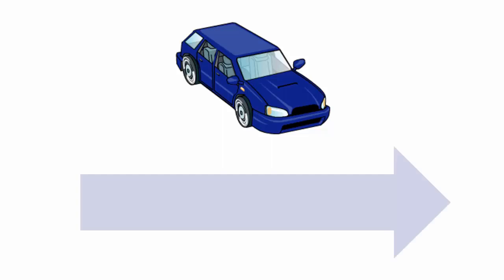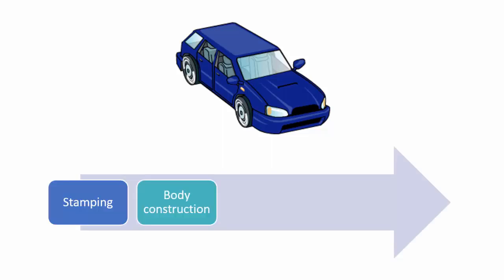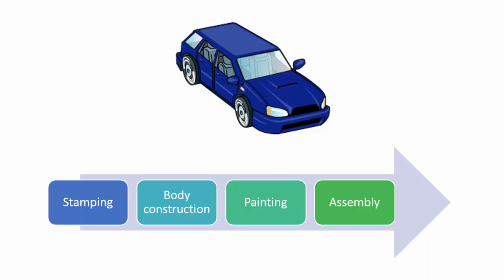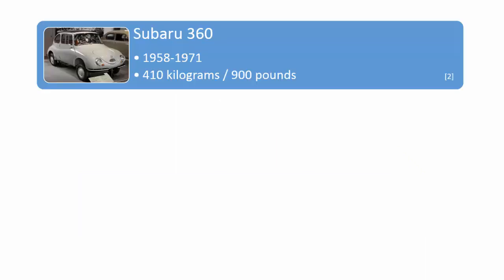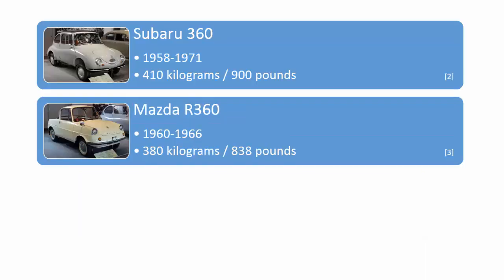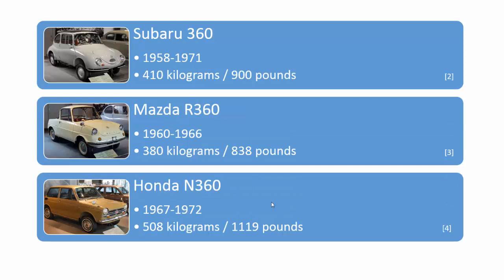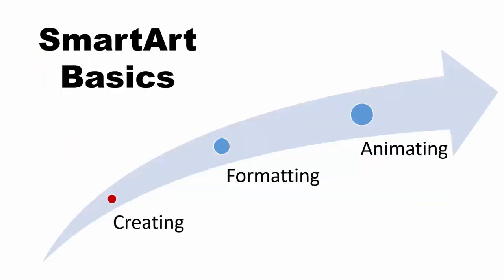There are five steps in making a car: stamping, body construction, painting, assembly, and inspection. Some SmartArt allows you to add images as well. I'm not really sure I like this slide because the images are too small, and I seldom use this type of SmartArt. So let's get started — I'm going to show you two ways of creating SmartArt.